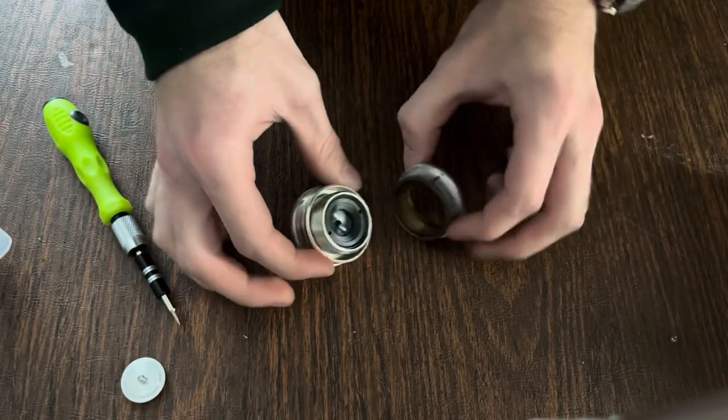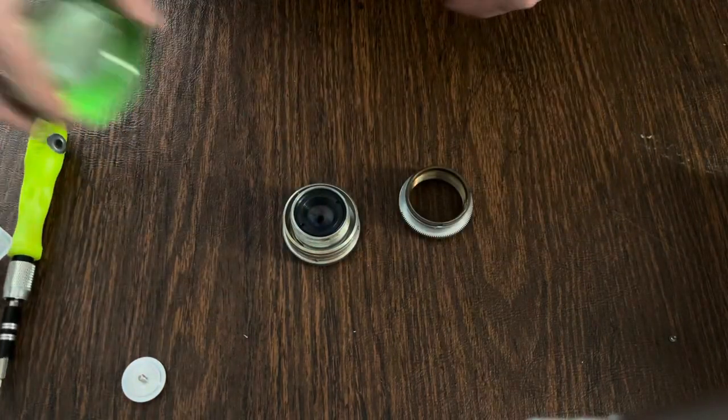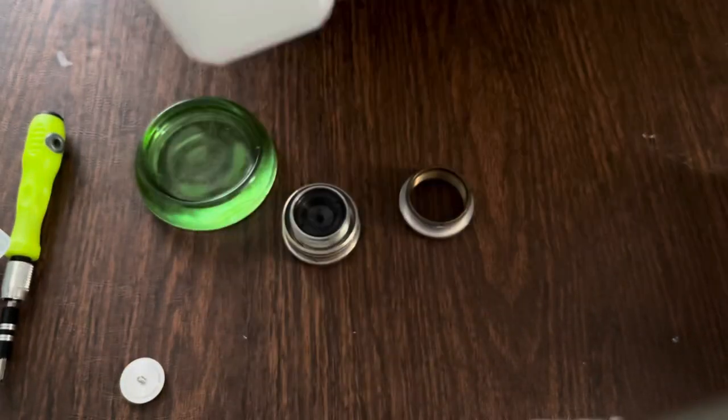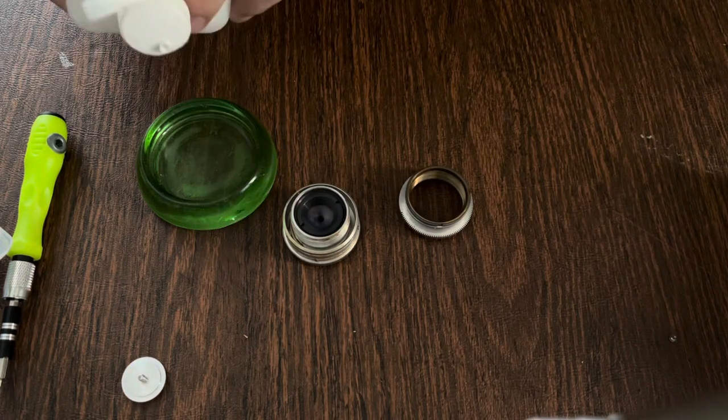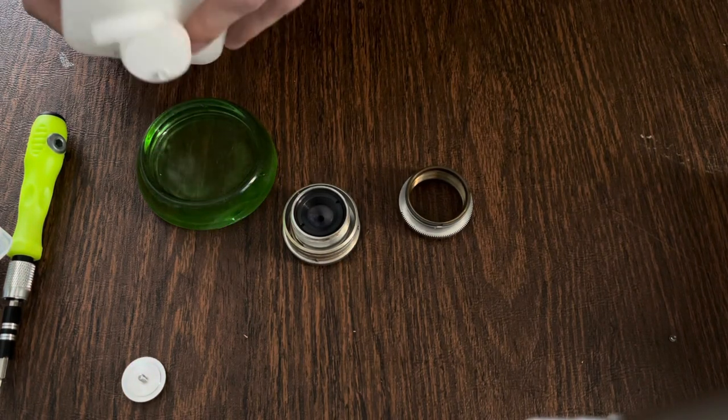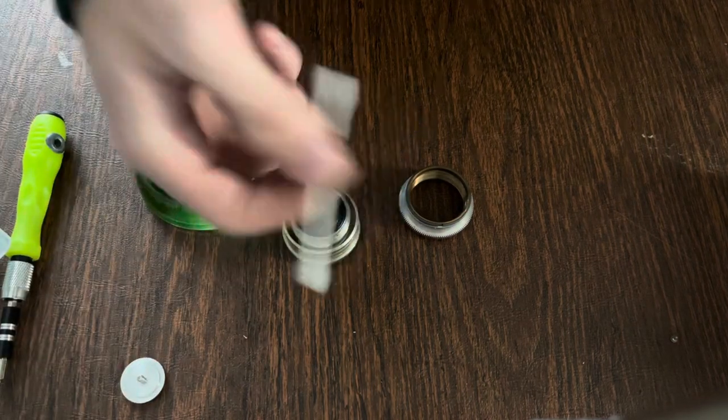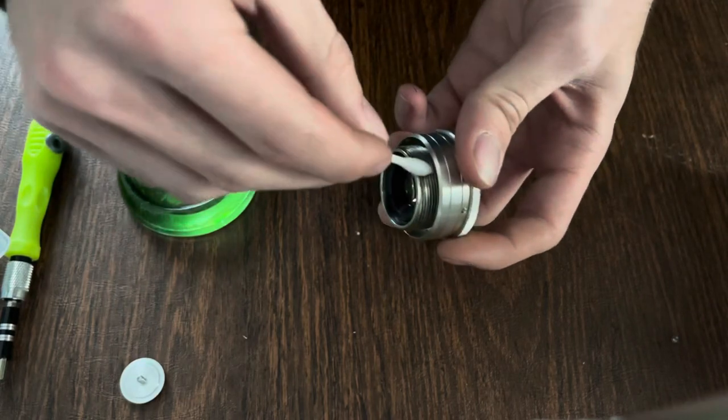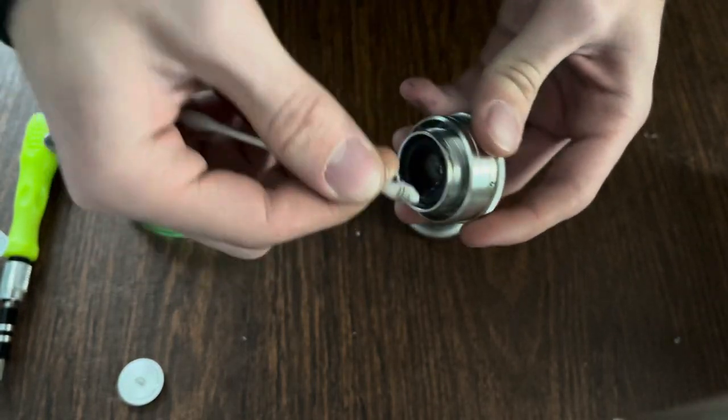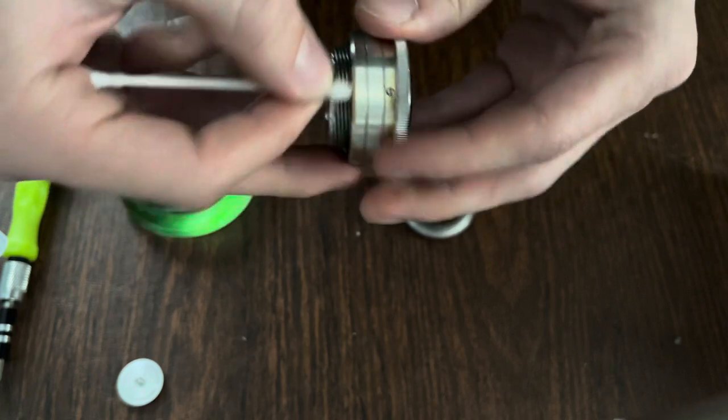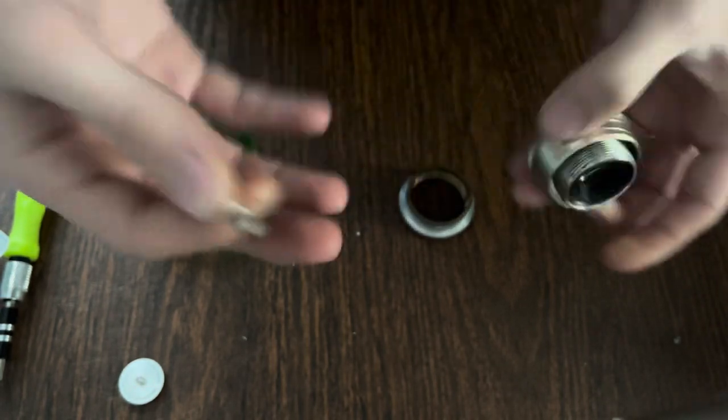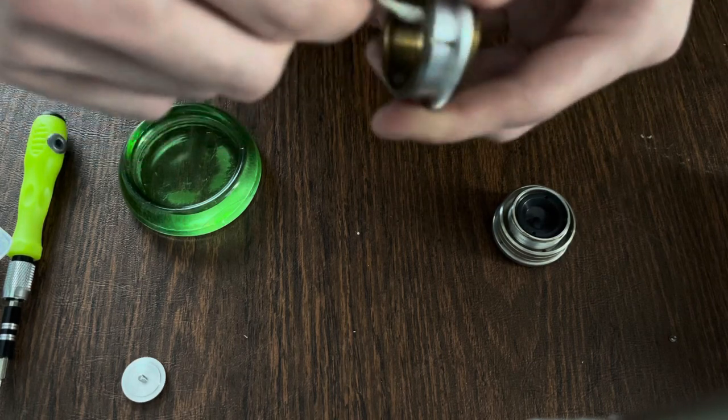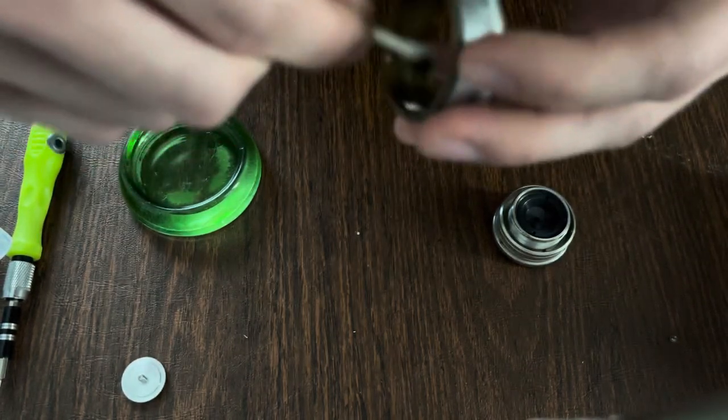To clean it, you're going to need some 91% or higher rubbing alcohol and a few cotton swabs. Dip it in the alcohol and rub it around the edges to get all the gunk off of these helical screws. Do that thoroughly for the whole helical mechanism.